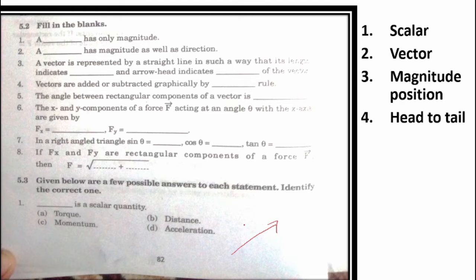The angle between rectangular components of a vector is. Rectangular components, which are 90 degree components. How much is the angle? It is 90 degrees.